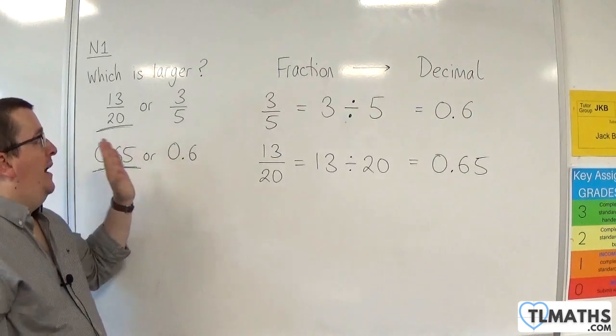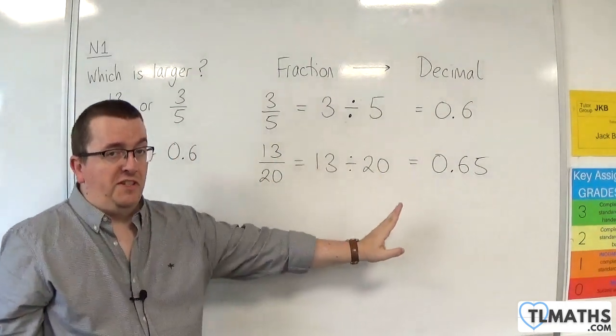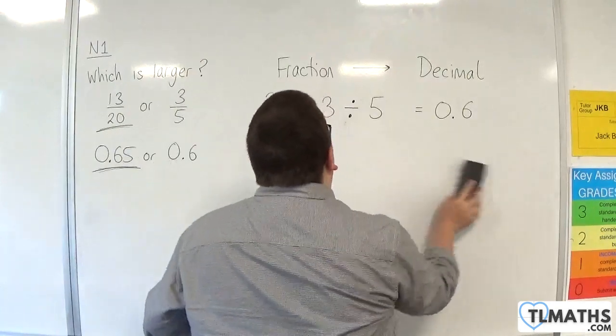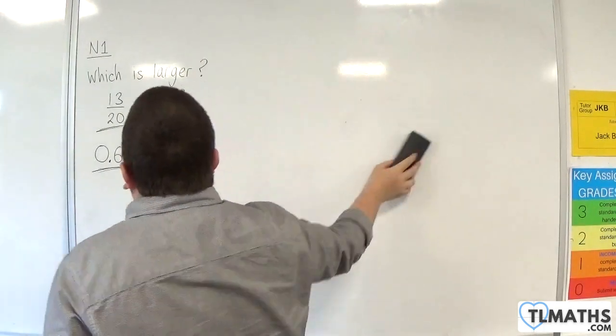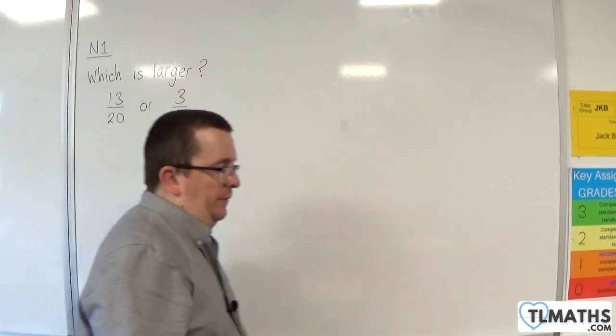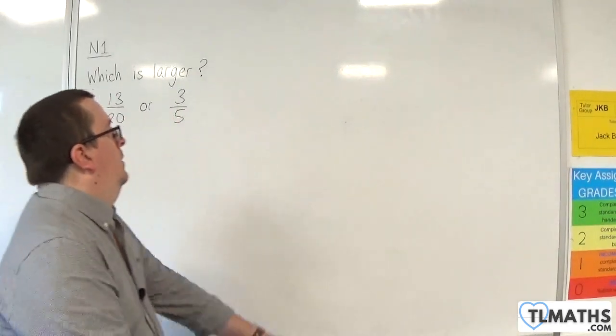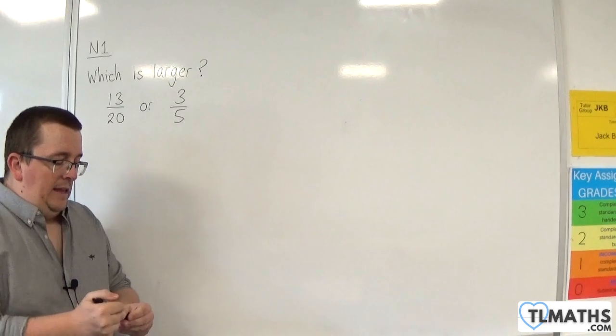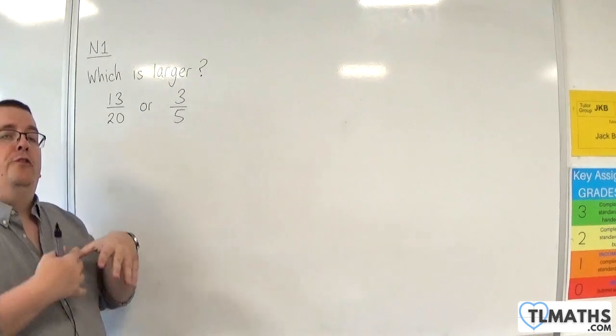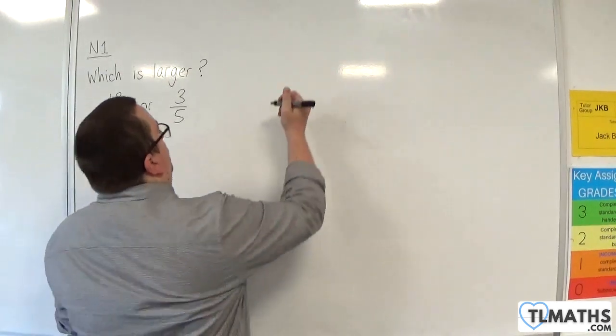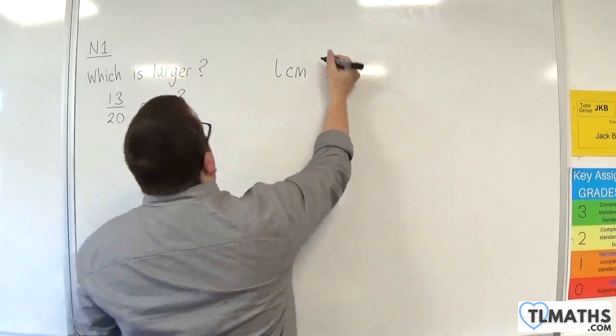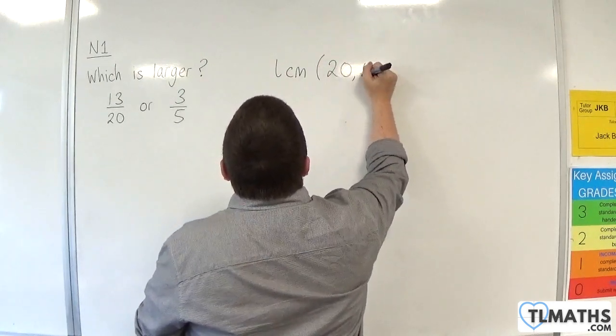Okay, so that is how we can do it by converting them from fractions to decimals. Now, an alternative method would be to get a common denominator. Now, there are two ways that you could do this. The first way is to find a lowest common multiple or the least common multiple of the denominators. So, we write that as LCM, lowest common multiple or least common multiple of 20 and 5.